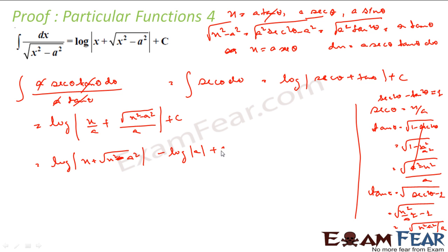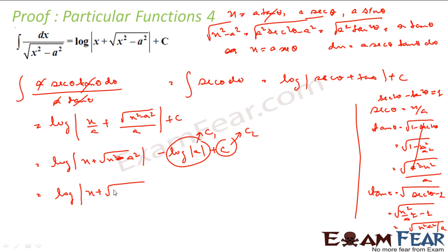Now, if you see this result has some constant, and this part also has a constant inside the log. Constant plus constant is just some constant. So I remove the separate constant part because adding constants together still gives a constant. That is my general formula.